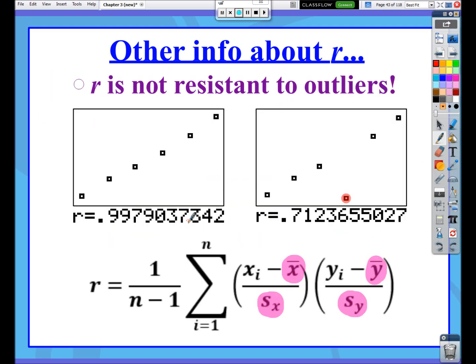Correlation is not resistant to outliers. So here I've got a nice scatter plot here that's almost perfectly linear. Notice this correlation. It is very near positive 1. But if I took one of those points, that point right there, and I decreased its y value, notice what happens to the correlation now. Like we went from nearly 1 to almost 0.7.